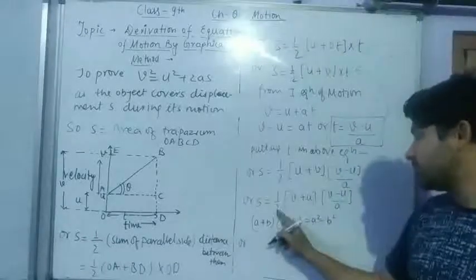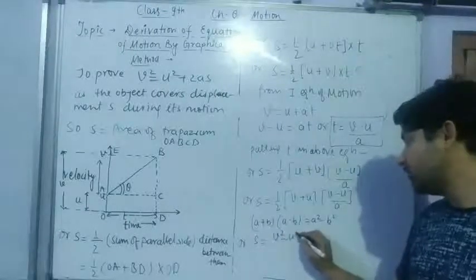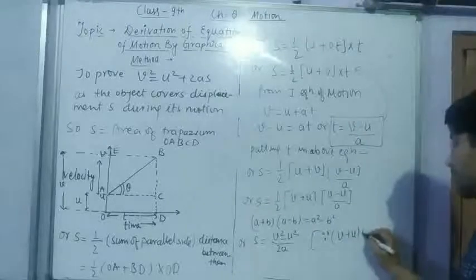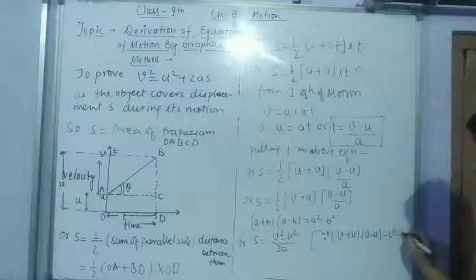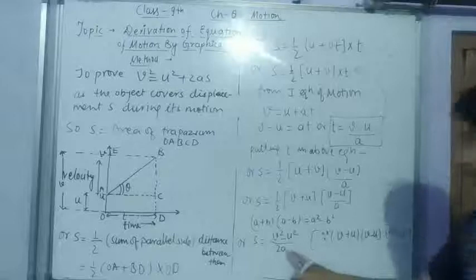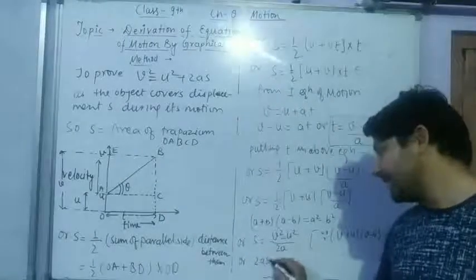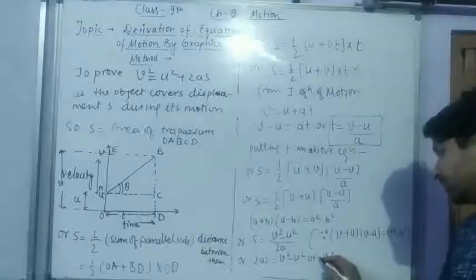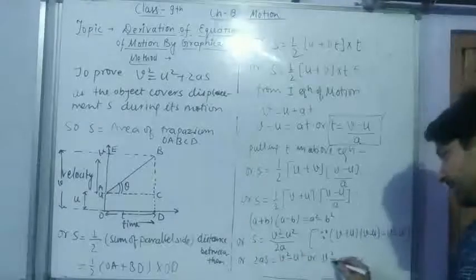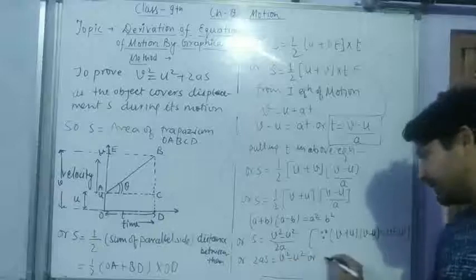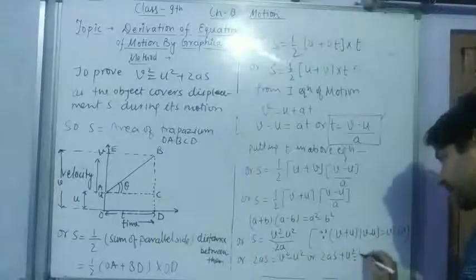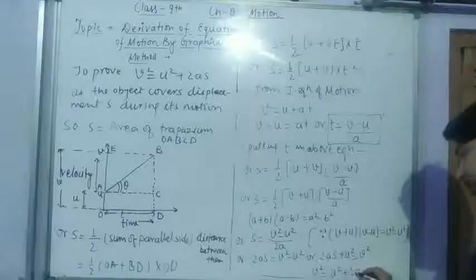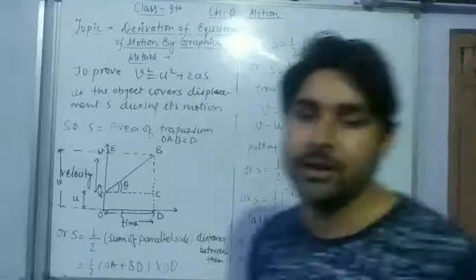We may write because V plus U and V minus U equals to V² minus U². Now 2A multiply both sides. It will be 2AS equals to V² minus U². This U² when taken to the other side, we get V² equals to U² plus 2AS.